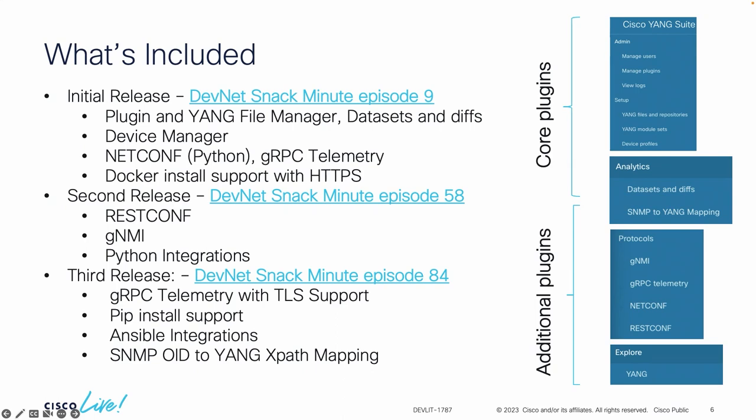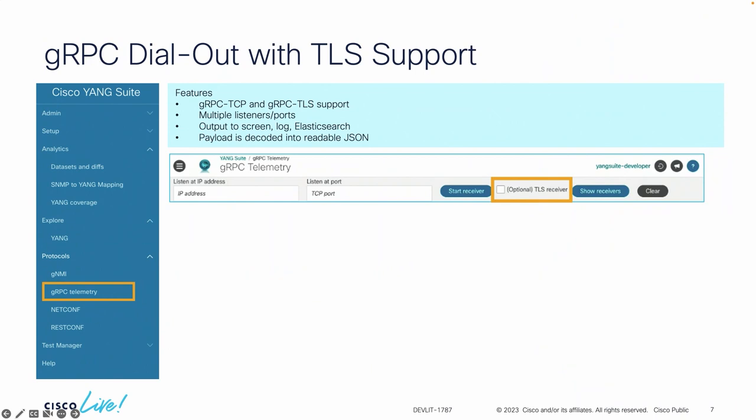What are some of the cool new features you can start leveraging? In terms of telemetry or data collection, we have had GRPC dial out for a while now, and now we're supporting TLS as well. Yang Suite can be used as a telemetry collector or receiver for your data, so if you want to test out how to use telemetry before actually getting started, this is one way that you can do it.